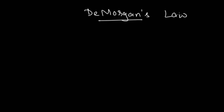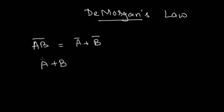Now let's understand De Morgan's Law. It states that (ab)-bar can be broken down and written as a-bar plus b-bar. Similarly, (a plus b)-bar can be broken as a-bar dot b-bar. So the dot gets converted to plus and the plus gets converted to a dot when breaking the bar sign — this is called De Morgan's Law.